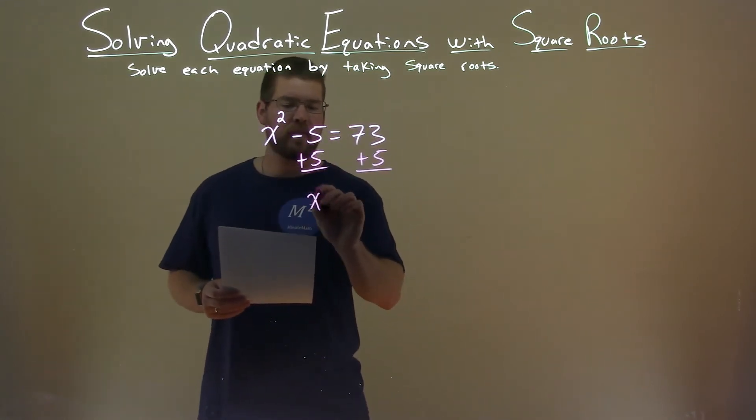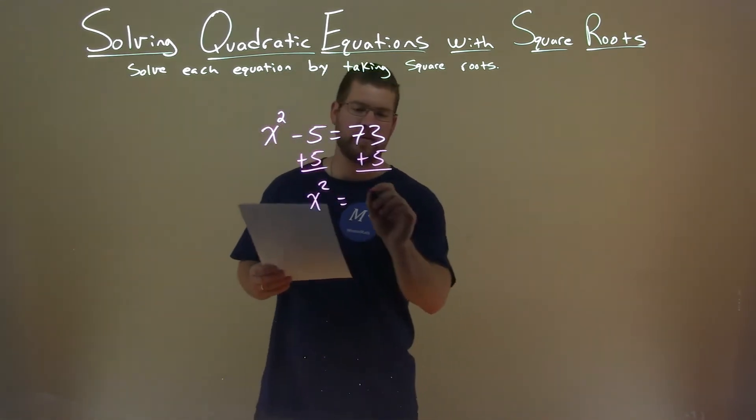That leaves us with x squared by itself here, and 73 plus 5 is a 78.